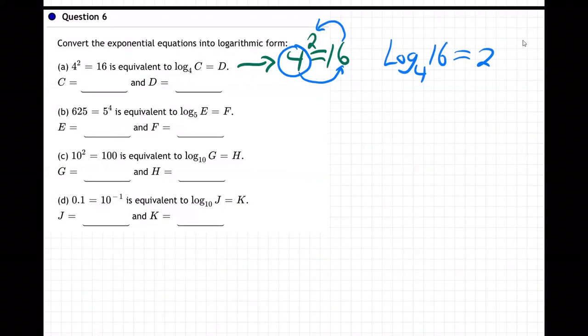Log base four of 16 is two. And they tell us right here, write it in the form log base four of C equals D. So we just go, okay, sure. So the C is 16, the D is two, the C is 16, the D is two. And there we go.